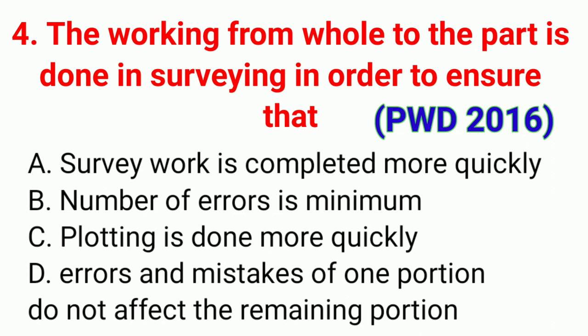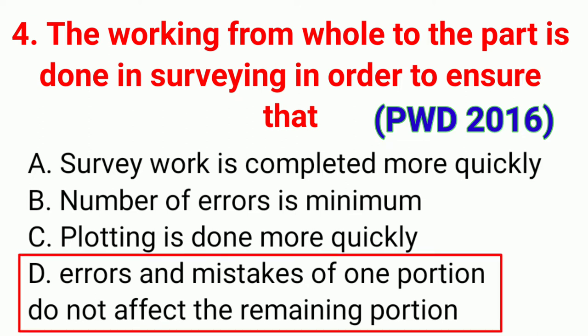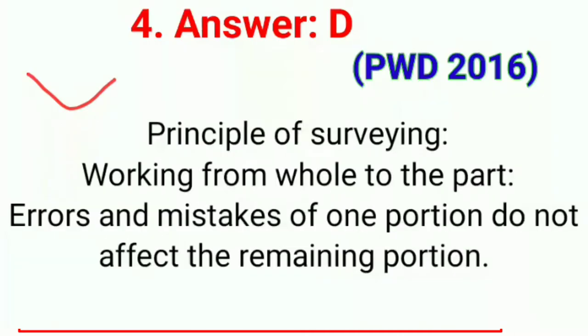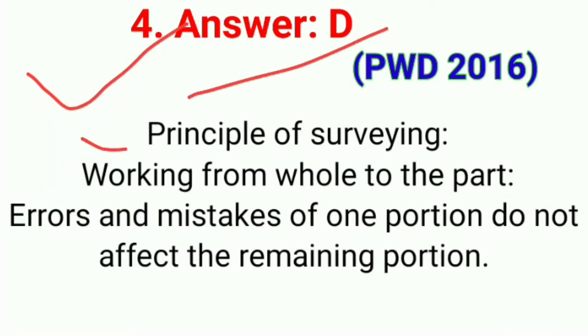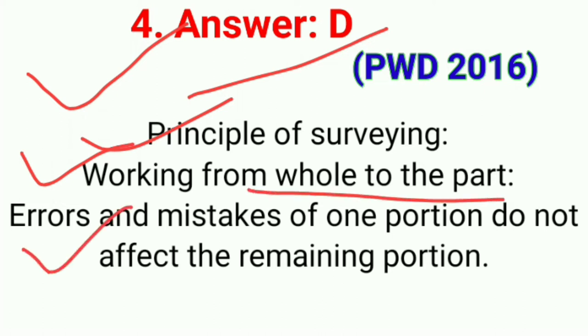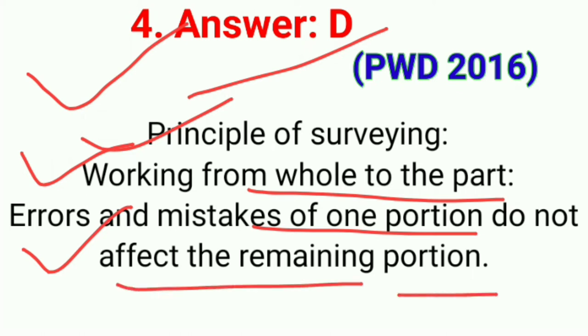Question number four: The working from whole to the part is done in surveying in order to ensure that. The correct answer is option D: errors and mistakes of one portion do not affect the remaining portion. This is the first principle of surveying — working from whole to the part — so that errors in one portion do not affect the remaining portion.